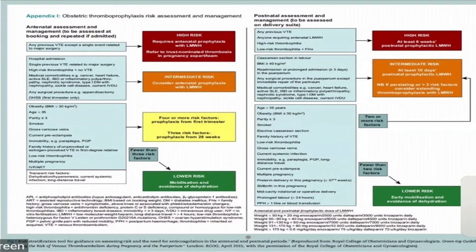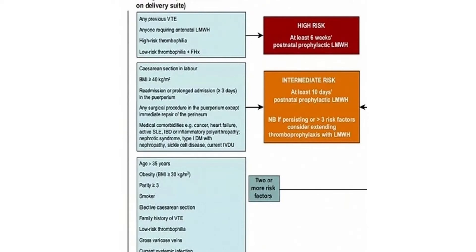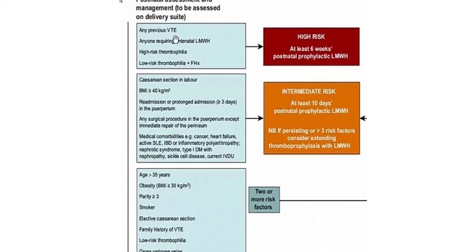This chart will be provided to you in the exam. On the top left it says obstetric thromboprophylaxis, but our patient has already delivered, so we use the right-hand side — post-natal assessment. Starting from the top: any previous VTE? We are not provided that information. Anyone requiring antenatal thromboprophylaxis? No. High-risk thrombophilia? No. Lower-risk thrombophilia? Our patient is not falling into any of these categories.